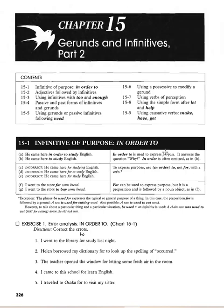Infinitive of purpose: 'in order to.' He came here in order to study English. 'In order to' is used to express purpose — it answers the question 'why.' 'In order' is often omitted in conversational English, so you can say simply: 'He came here to study English.'